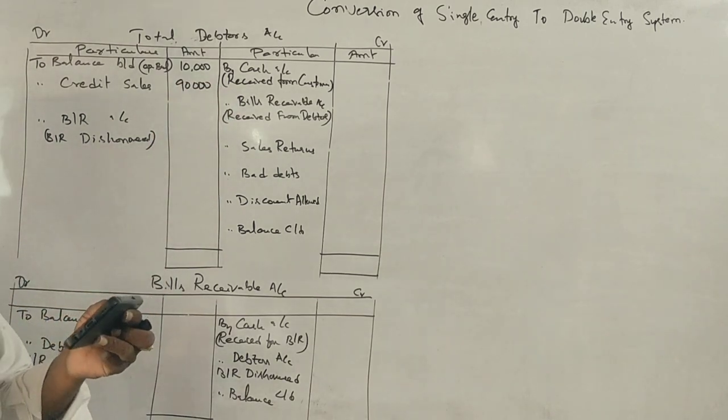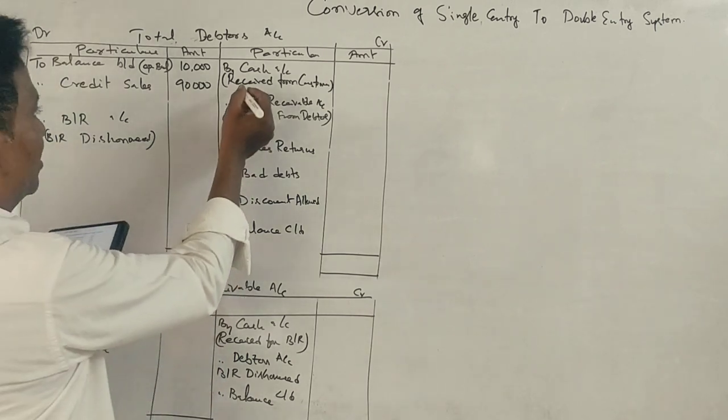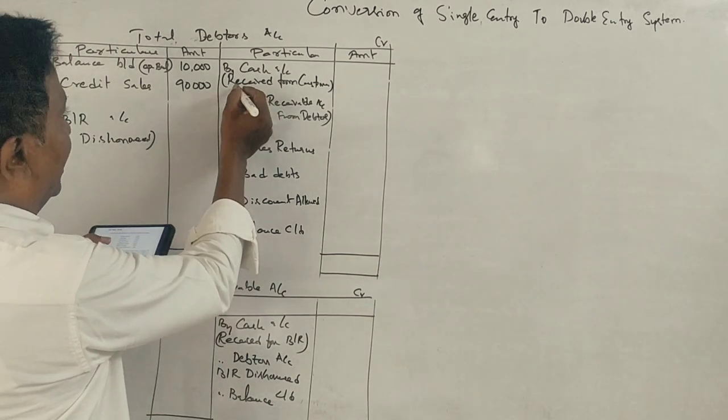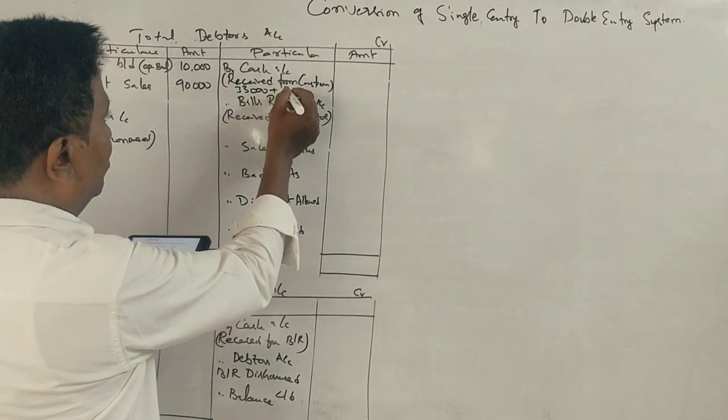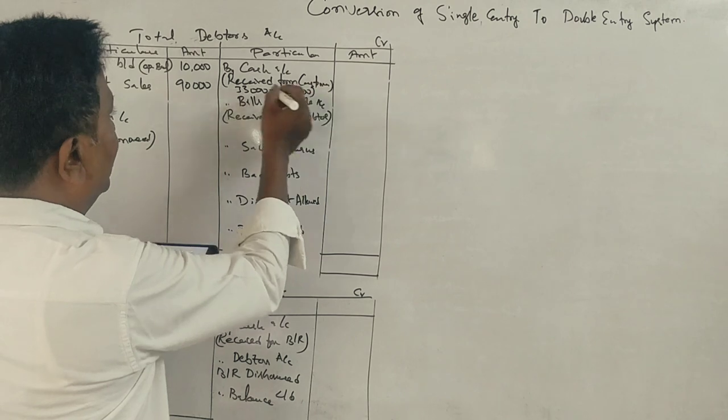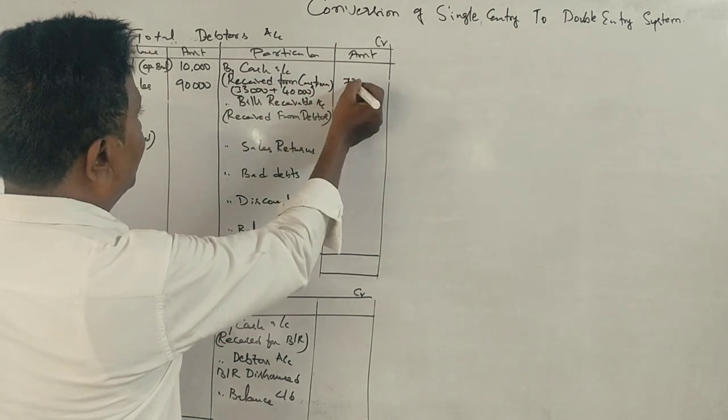Cash received: 33,000. Cheque received: 33,000. Correct.